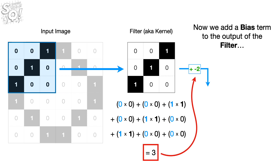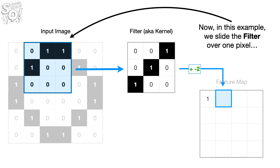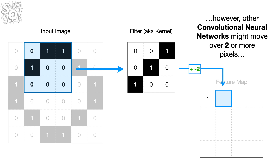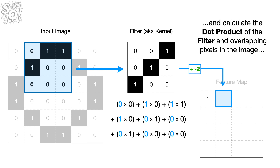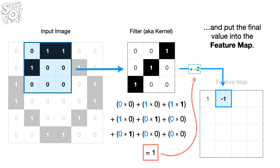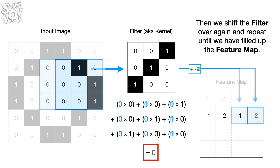Now we add a bias term to the output of the filter, and put the final value into something called a feature map. In this example, we slide the filter over one pixel — though other convolutional neural networks might move over two or more pixels. We calculate the dot product of the filter and overlapping pixels in the image, add the bias term, and put the final value into the feature map. Then we shift the filter over again and repeat until we have filled up the feature map.